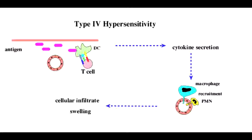What are the diagnostic tests for type 4 hypersensitivity? The diagnostic tests include PPD and the patch test. PPD is what they do for contact dermatitis, whereas the patch test is the TB skin test.